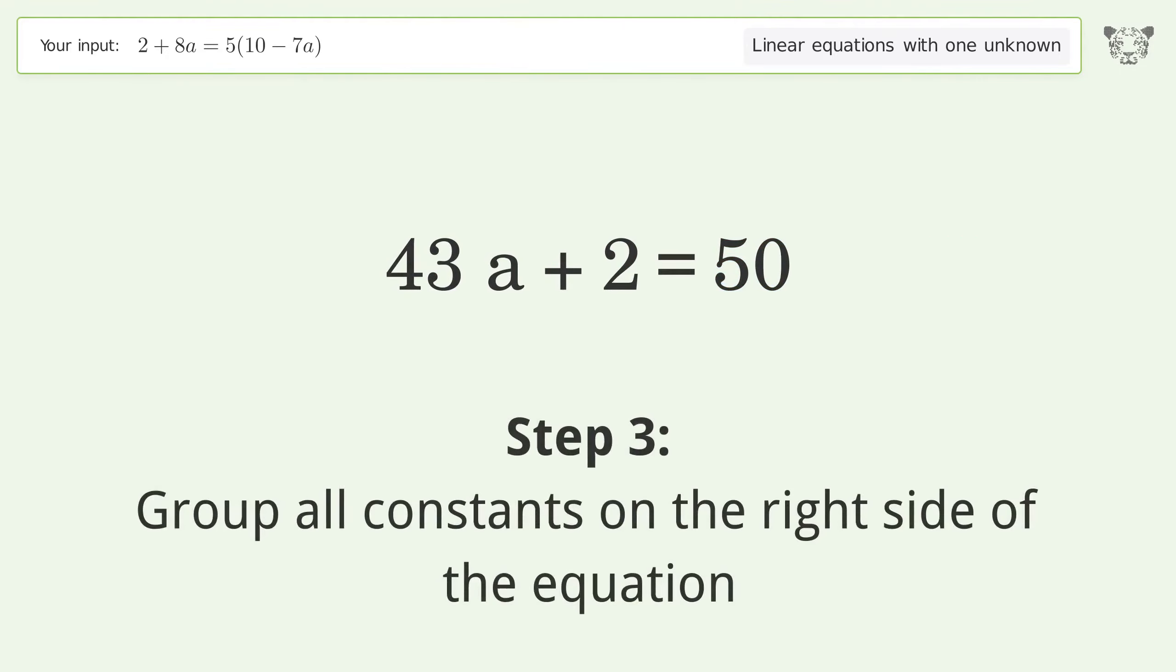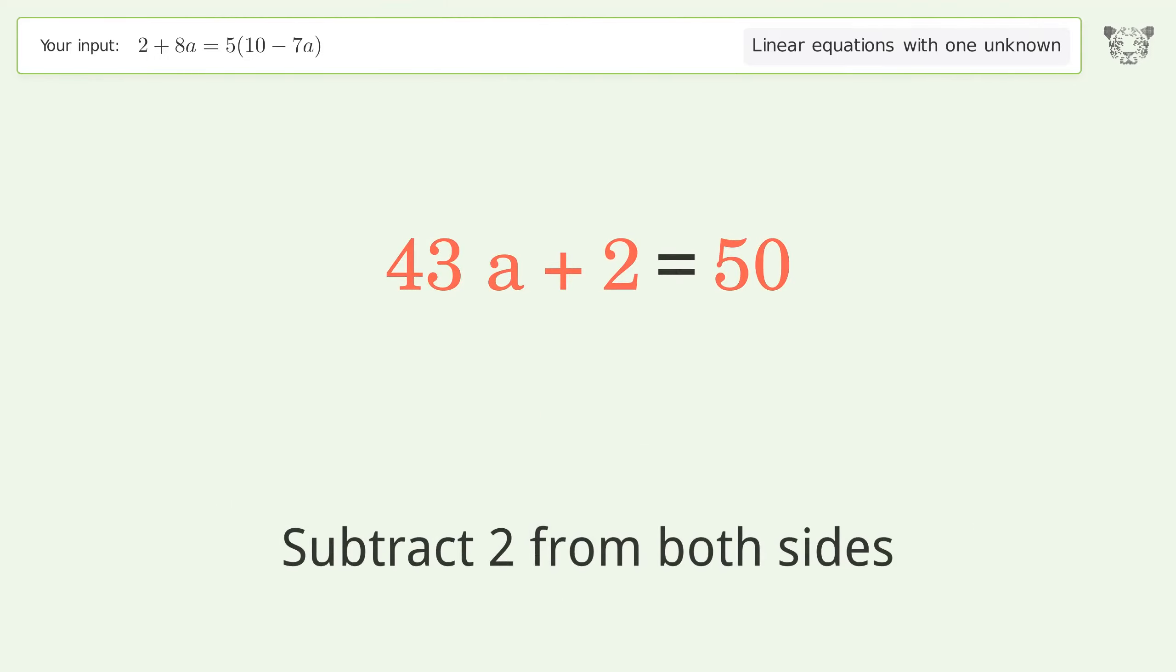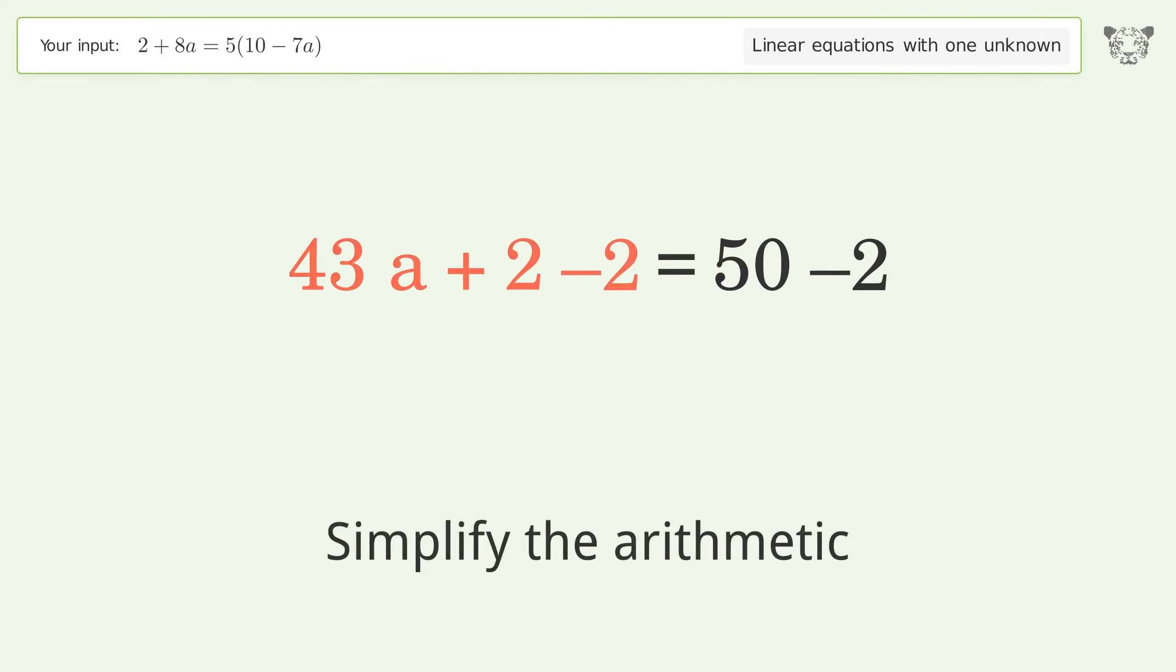Group all constants on the right side of the equation. Subtract 2 from both sides. Simplify the arithmetic.